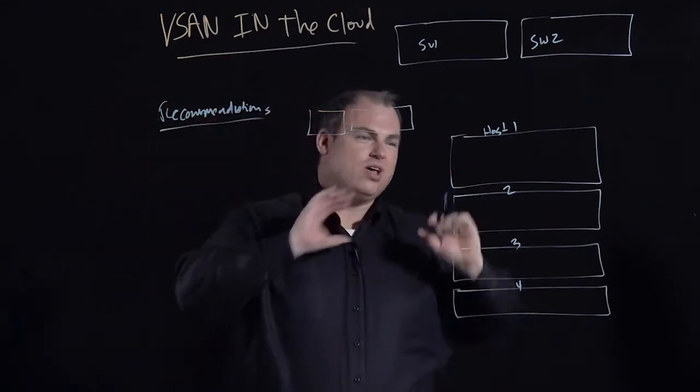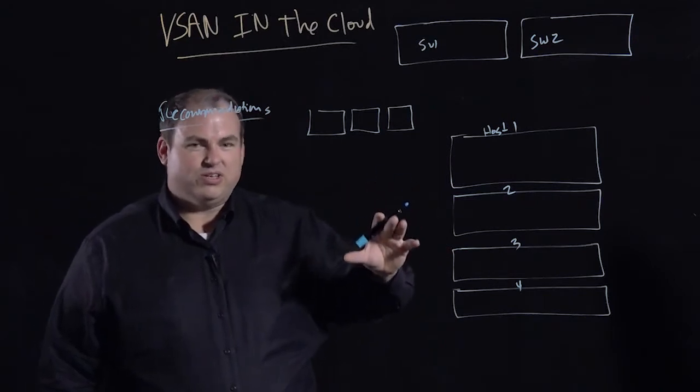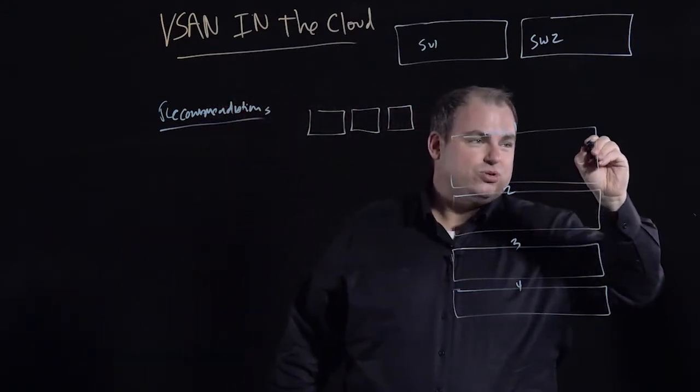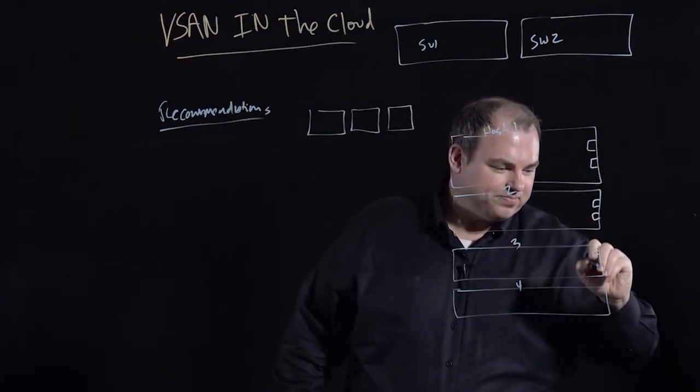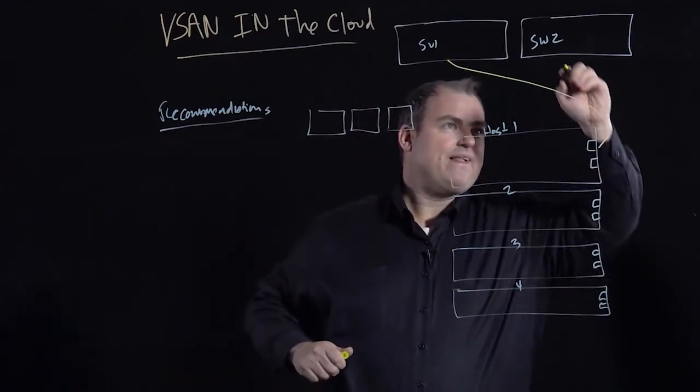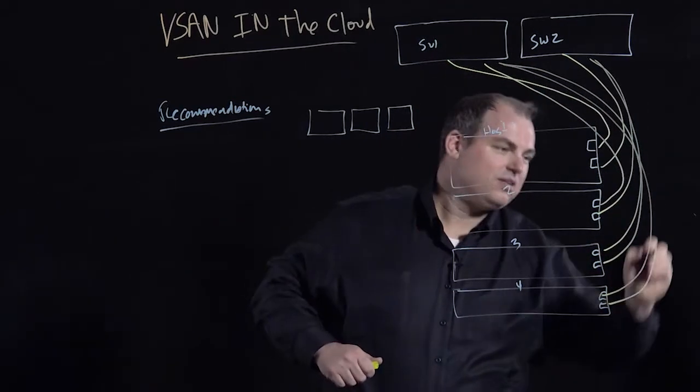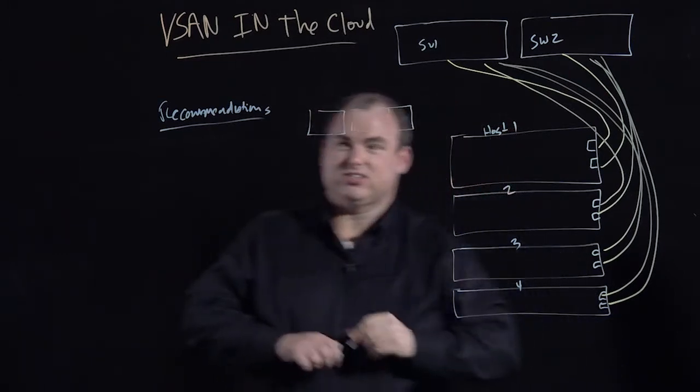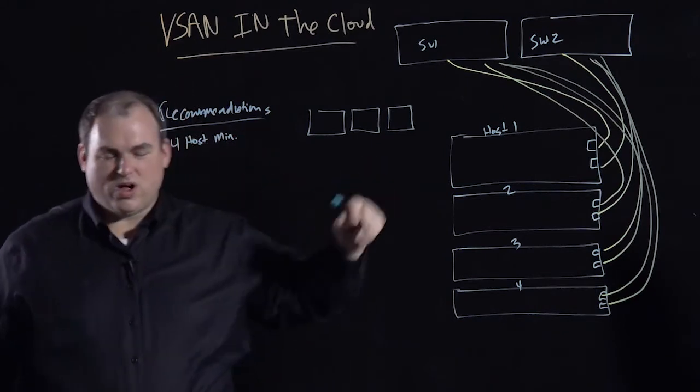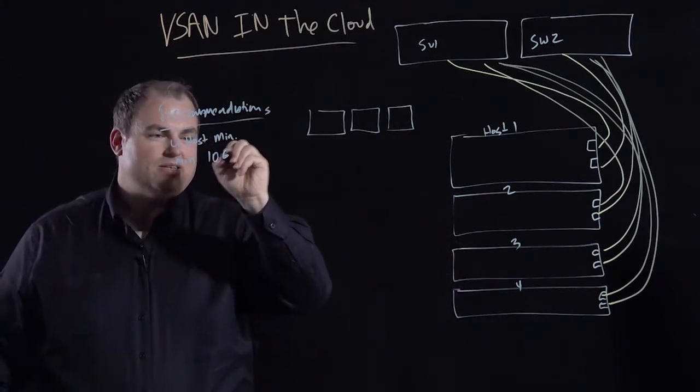All right, so now we have our hosts, we have our switches. Our configuration is going to be an all-flash configuration. In vSAN, it's important that you use 10 gig, and it can be dedicated or shared. In this configuration, we're going to choose shared. And we're also going to choose two 10 gig ports, and then we'll just go ahead and connect up to our switches. All right, so one port to each switch. First recommendation, four host minimum. Then, we're going to say for all-flash, min 10 gig.